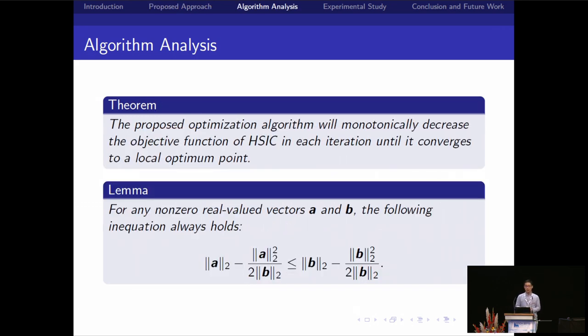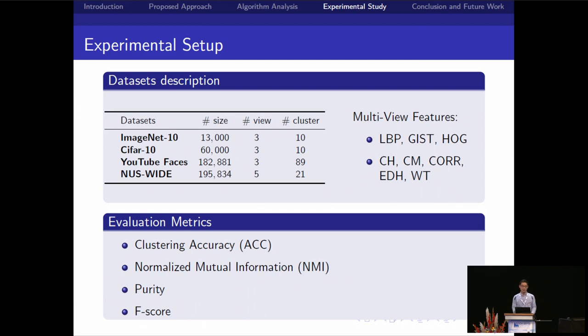We also gave a theorem to demonstrate the convergence of our proposed optimization algorithm. Our learning algorithm can efficiently converge to the local optimized points. Here, we give four big large-scale datasets to demonstrate the effectiveness of the proposed method. Notably, the NUS-WIDE dataset has five views. Each view has about 200,000 features. So it's totally approximately 1 million features. We have four evaluation metrics to show the effectiveness.